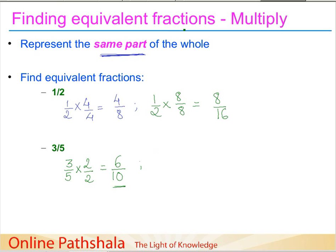Similarly for three by five, if we multiply both by two we get six by ten, and if we multiply by five we get fifteen by twenty-five. So six by ten and fifteen by twenty-five are two equivalent fractions for three by five, and you can find as many as you wish by changing the number you multiply by.